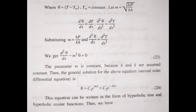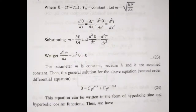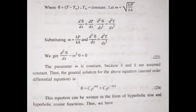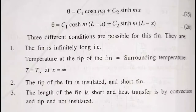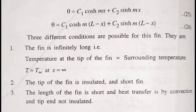The general solution is θ = c₁·e^(mx) + c₂·e^(−mx). Equivalently, using hyperbolic functions: θ = c₁·cosh(mx) + c₂·sinh(mx).